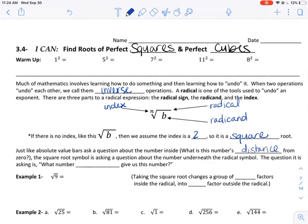The square root symbol is asking a question about the number underneath the radical symbol. The question it is asking is what number squared or what number times itself gives us this number?